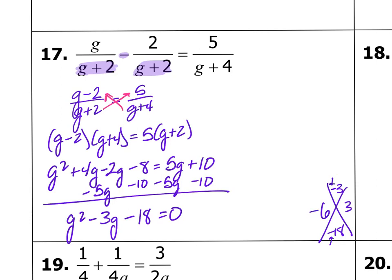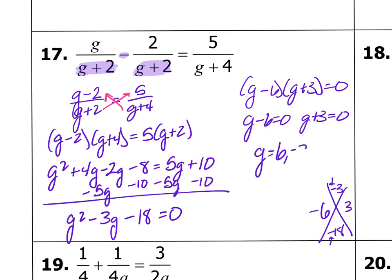So this is going to factor to g minus 6 times g plus 3 equals 0. So g minus 6 equals 0, and g plus 3 equals 0. That means g is going to equal positive 6 and negative 3. And do either of those numbers make my denominator 0? Nope. So there we go. g equals 6 and negative 3. Good job, you guys. So now we're going to go ahead and go on to the next problem.